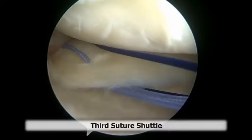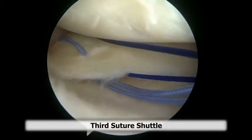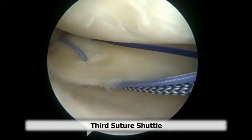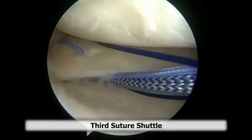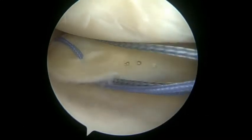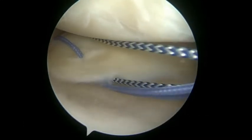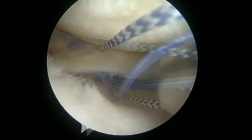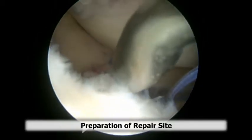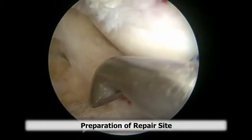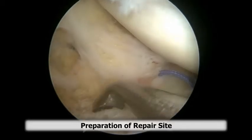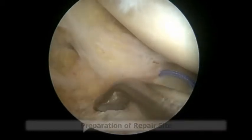A simple stitch will be placed medial to the horizontal mattress in similar fashion using a PDS to shuttle. Next, we use a curette to prepare the repair site and debride any soft tissue.